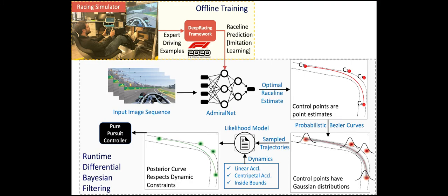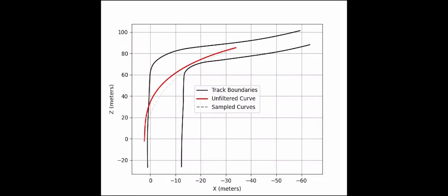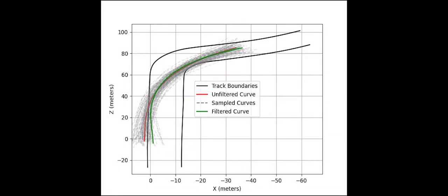This optimal trajectory is then passed on to a low-level Pure Pursuit controller, which generates the steering and throttle commands to control the agent autonomously in the game. This animation shows an iteration of the DBF method where samples are generated around a fixed trajectory and a faster trajectory is eventually chosen as a result of the filtering process.